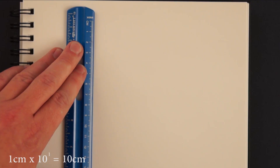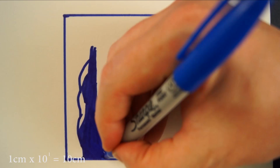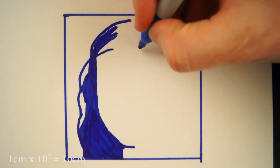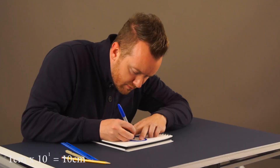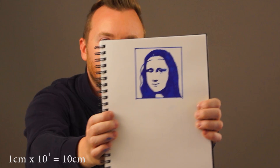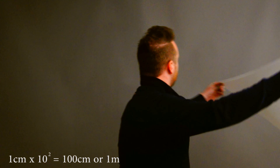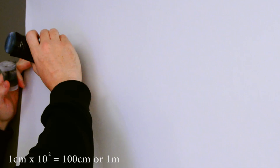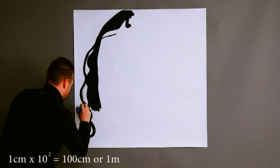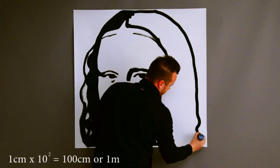Our next image is 1 centimeter times 10 to the first power, or 10 by 10 centimeters. It's still pretty small but compared to our first drawing it's huge. To the second power we're getting a pretty good size image here. Now we're up to 100 centimeters by 100 centimeters, or 1 by 1 meter. It's nice to get away from those tiny little pictures.